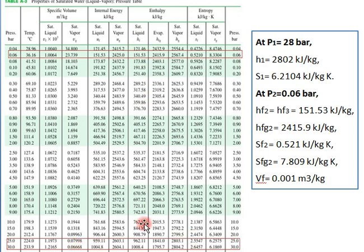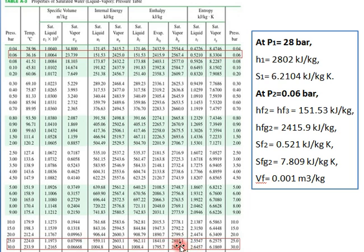At pressure P1 = 28 bar, we need the enthalpy and entropy values. Since our steam is saturated vapor (not liquid), we choose the saturated vapor column. Interpolating between 25 and 30 bar, h1 = 2802 kJ/kg. For entropy, also from the saturated vapor column, s1 = 6.2104 kJ/kg·K.